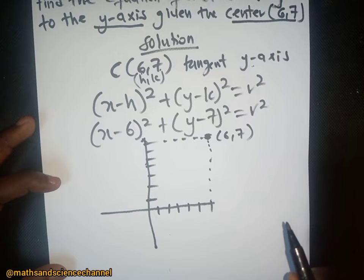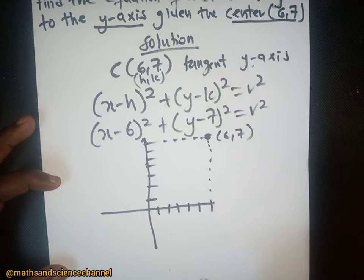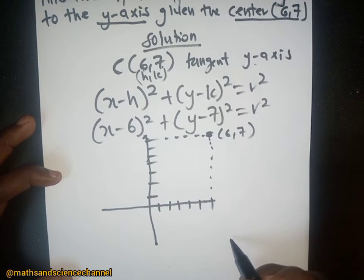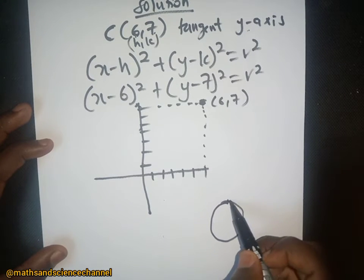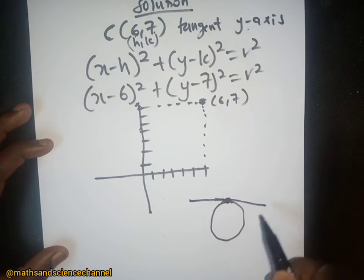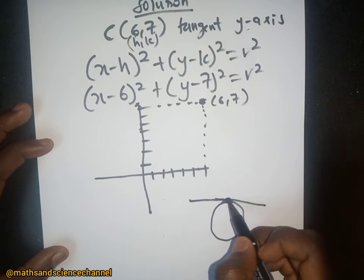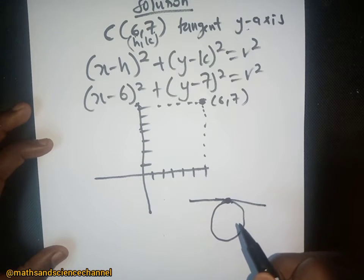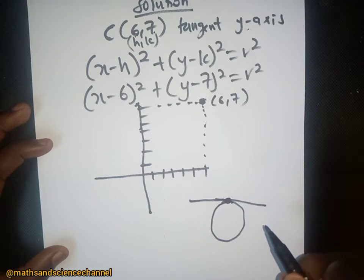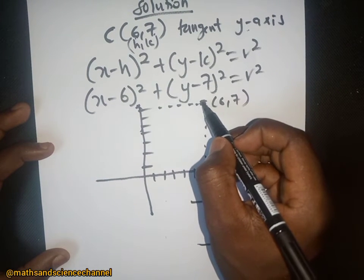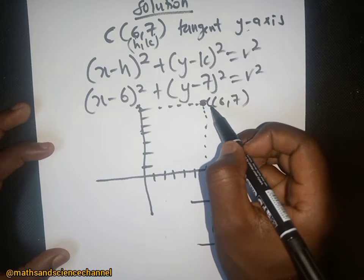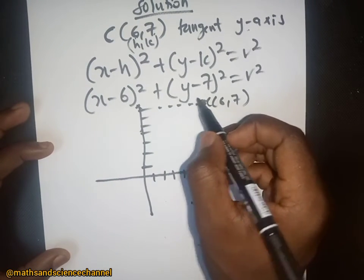Since the circle is tangent to the y-axis, it means it touches the y-axis at exactly one point. To illustrate tangency: if you have a circle and a line touching it at one point, that line is called the tangent line, passing through just that one point of contact.